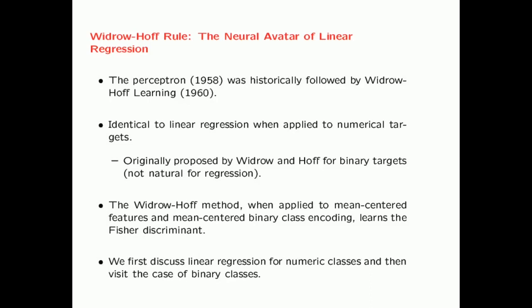The Widrow-Hoff rule not only has connections to linear regression but is also closely connected to the Fischer discriminant. This relationship follows from the classical relationship between linear regression and the Fischer discriminant. Here we will first discuss linear regression for numeric classes and then visit the case of binary classes.